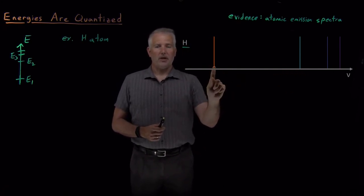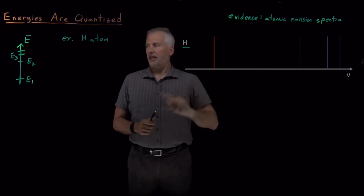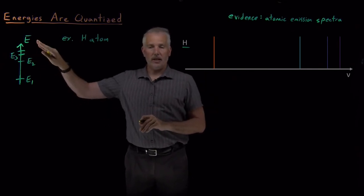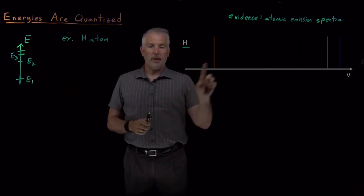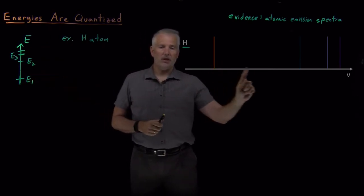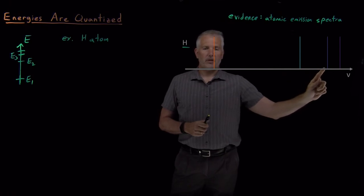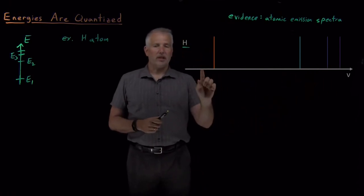We see that only certain frequencies of light are emitted. This reddish color of light can be emitted by a hydrogen atom. If I excite it up to some higher energy level, it can drop down to a lower energy and emit a photon of this reddish color, or this bluish color, or these violet colors, but only these colors.